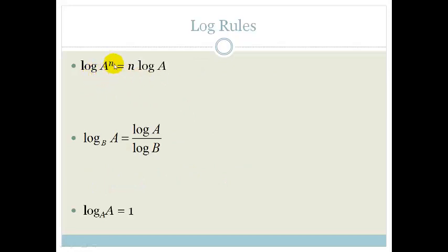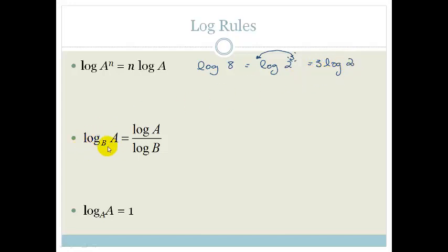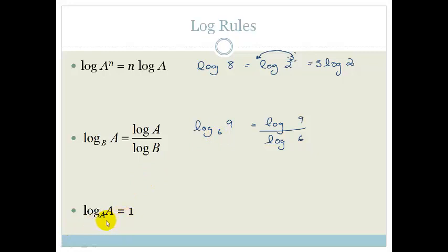For the power rule: log of a to the n, base b — the n comes to the front. For example, log 8 can be written as log 2 cubed, and then the 3 comes to the front to give 3 times log 2. Also, we can break logs up using the change of base formula: log 9 base 6 can be written as log 9 over log 6, as long as the base is the same. And log a base a is always equal to 1 — so log 43 base 43 equals 1.